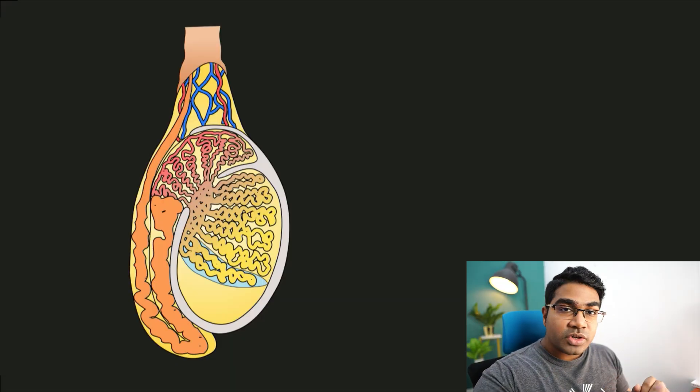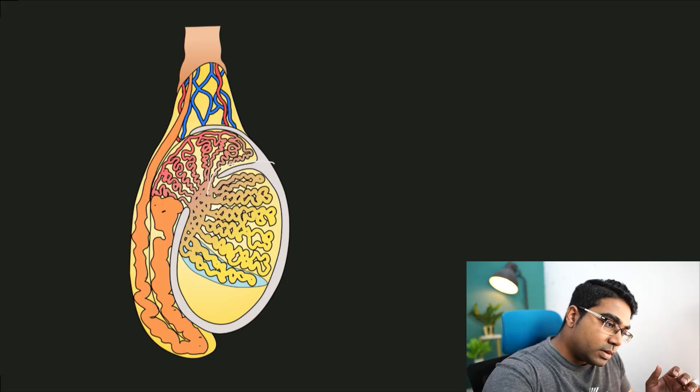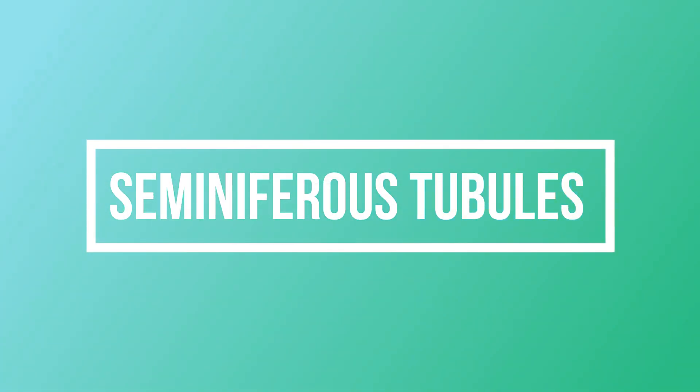This process takes place in the testis of the male. The diagram here shows the longitudinal section of a testis. The tiny tubes that we see here are known as seminiferous tubules.